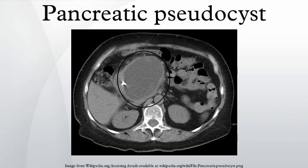A pancreatic pseudocyst is a circumscribed collection of fluid rich in pancreatic enzymes, blood, and necrotic tissue, typically located in the lesser sac of the abdomen. Pancreatic pseudocysts are usually complications of pancreatitis, although in children they frequently occur following abdominal trauma.